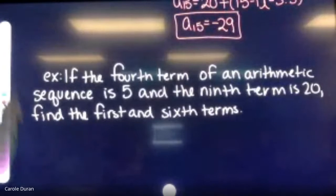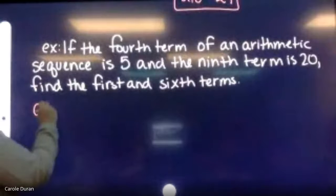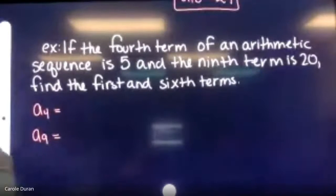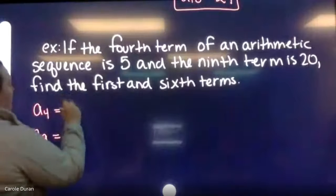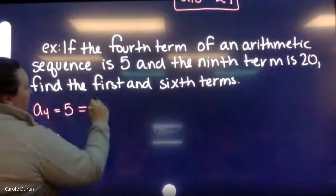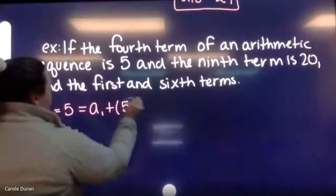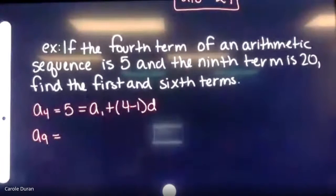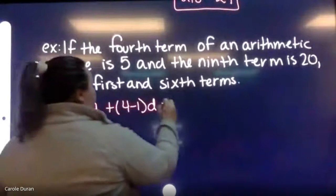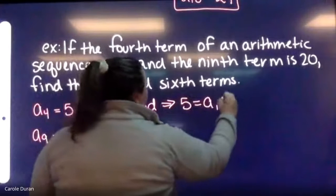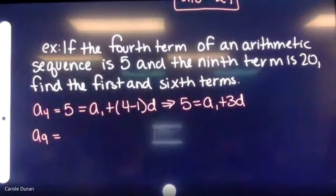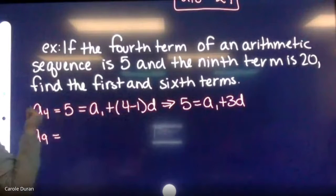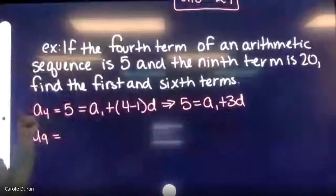Using the fourth term: a(4) equals a(1) plus four minus one times d, which simplifies to five equals a(1) plus 3d. I left a(1) and d blank because I don't know them yet.